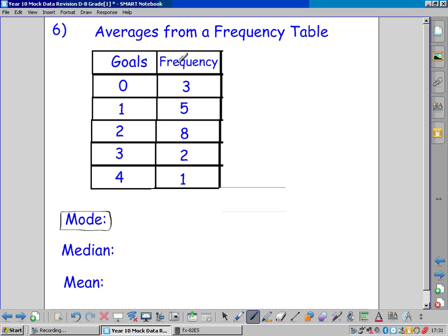I've got a frequency table, the frequency that comes up the most is 8, but that's not the mode. The modal number of goals is what we're after, not the number that comes up the most. That indicates that it's 2 goals that's the mode. The most common number of goals per game is 2.